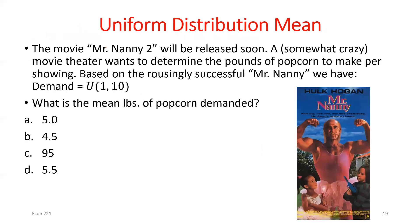This sometimes helps: if asked for P(demand > 5.5) and 5.5 is the mean and median of this symmetric distribution, then that probability is exactly 0.5 — the median splits the data in half, 50% above, 50% below.